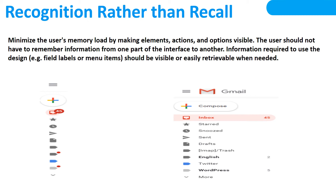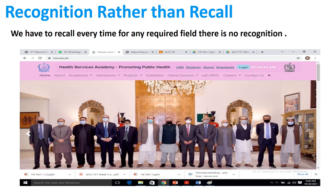Recognition rather than recall: minimize the user's memory load by making elements, actions and options visible. The user should not have to remember information from one part of the interface to another. As you see in the given picture, the inbox icon and the sent icon with an arrow button show what we need to do. In my website, we have to recall every time for any required field — there is no recognition, so the recall option is used instead.